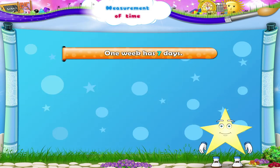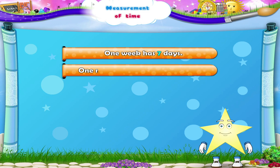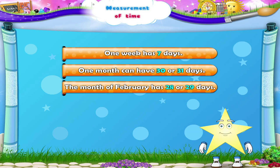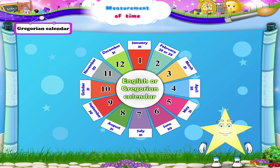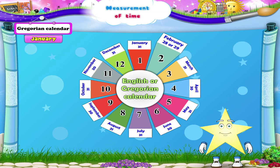Starry, one week has seven days, but one month can have 30 or 31 days. There is one more exception — the month of February has 28 or 29 days. Let us first see the months of the year according to the English or Gregorian calendar. There are 12 months in a year. The first month of the year is January, which has 31 days. The second month is February; it can have 28 or 29 days.